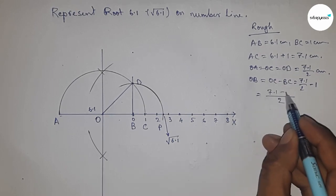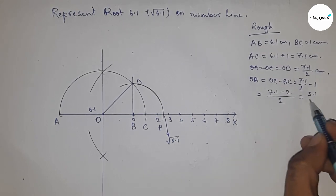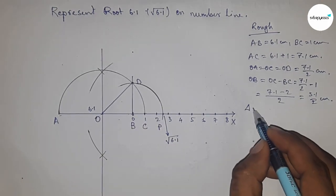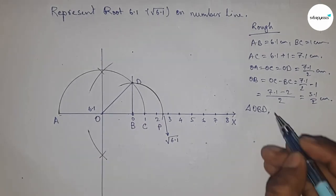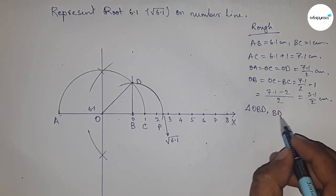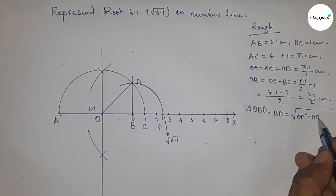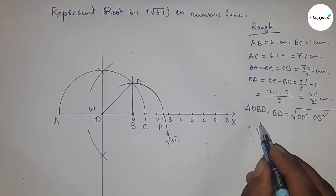So this is 5.1 by 2 centimeters. Now from right angle triangle OBD, we can write BD equals, by Pythagoras theorem, root over OD squared minus OB squared—hypotenuse squared minus base squared. Now put the values of OD and OB.